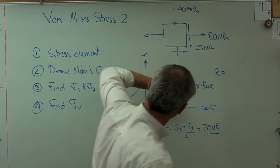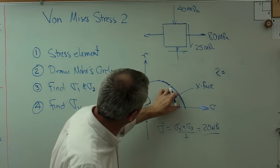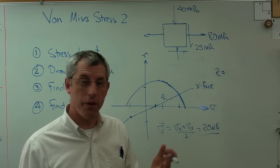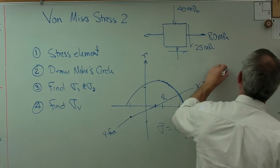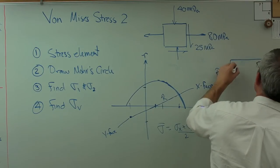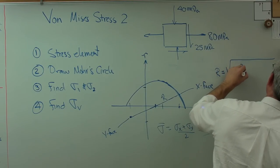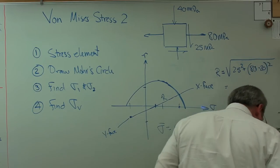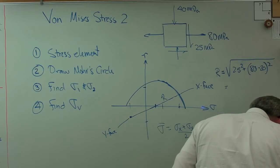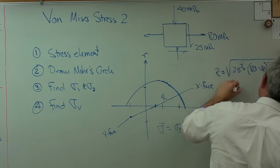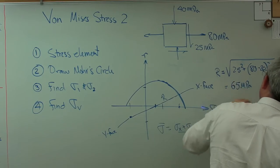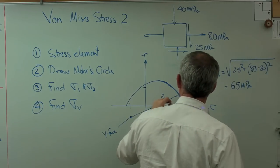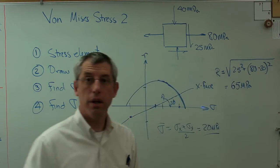Radius is going to be that distance right there squared plus that distance right there squared, add them together and take the square root, just Pythagorean theorem. So, it's going to be 25 squared plus 80 minus 20 squared. And that should come out to be, if I did this right, 65 megapascals. Okay, and that distance right there, that angle, is 2 phi.